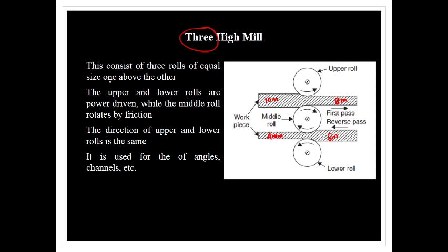The 3-high rolling mill consists of three rollers of equal size, one above another. The upper and lower rollers are power driven, while the middle roller is driven by friction. The direction of rotation of upper and lower rollers is the same. It is used for manufacturing angles and channels — angle is an L-shaped cross-section, and channel is a C-type cross-sectional beam.